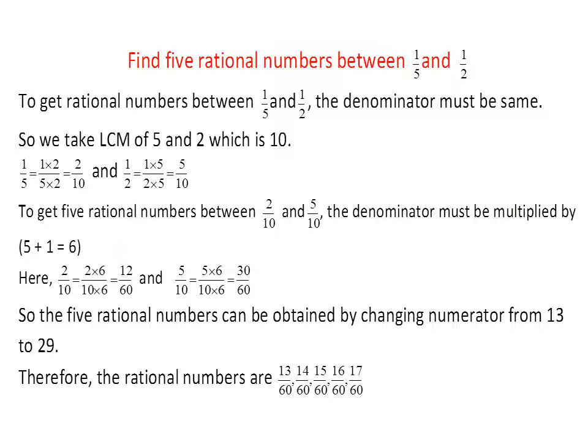The five rational numbers can be obtained by changing the numerator from 13 to 29 — there are many rational numbers between these, but we need only five. So we write any five: 13/60, 14/60, 15/60, 16/60, and 17/60.